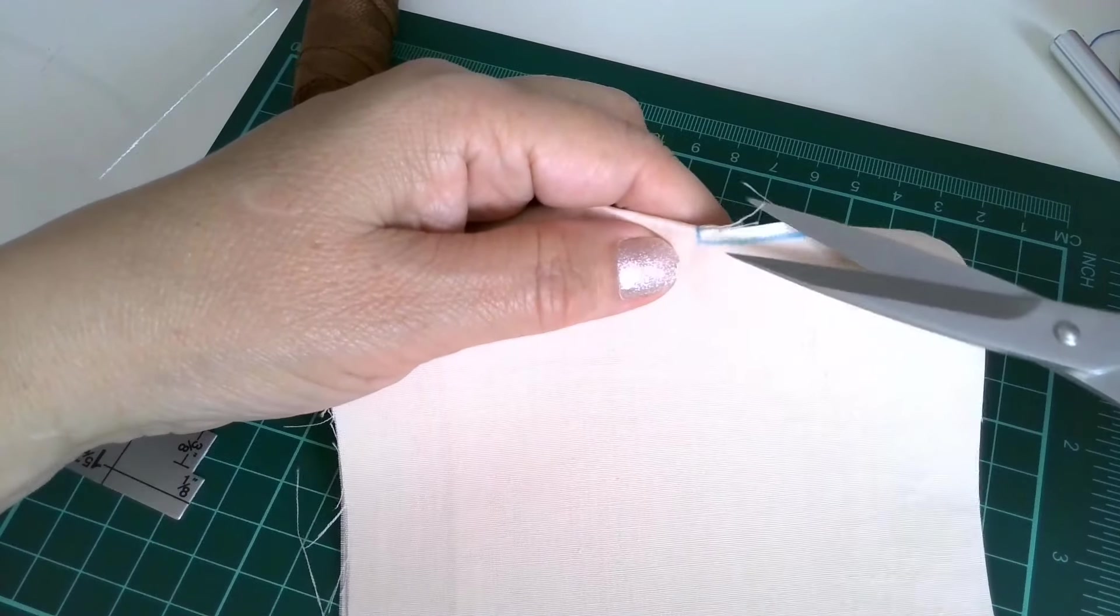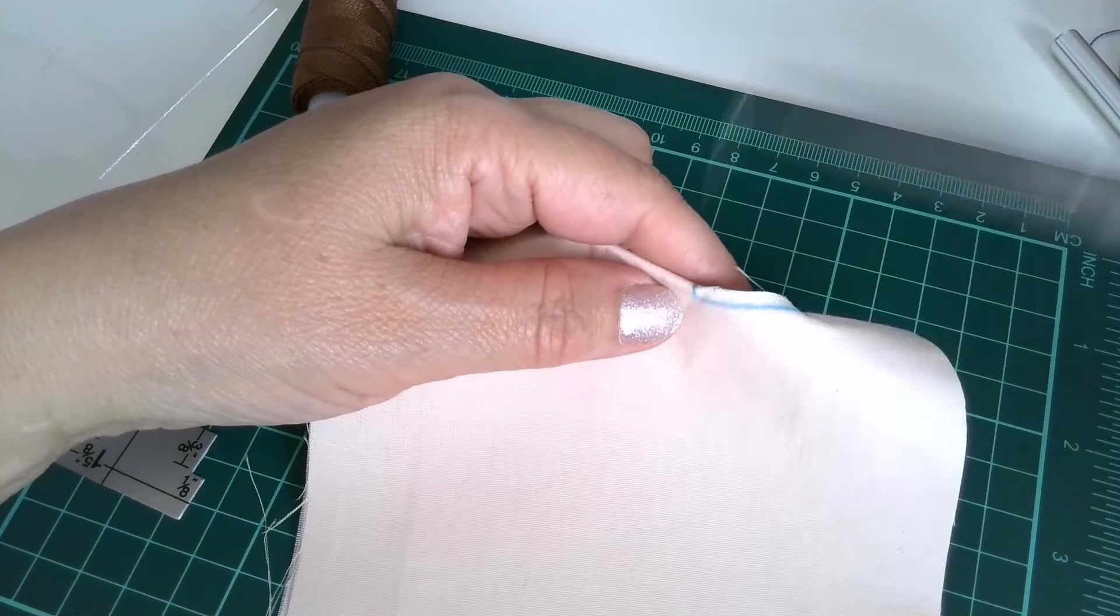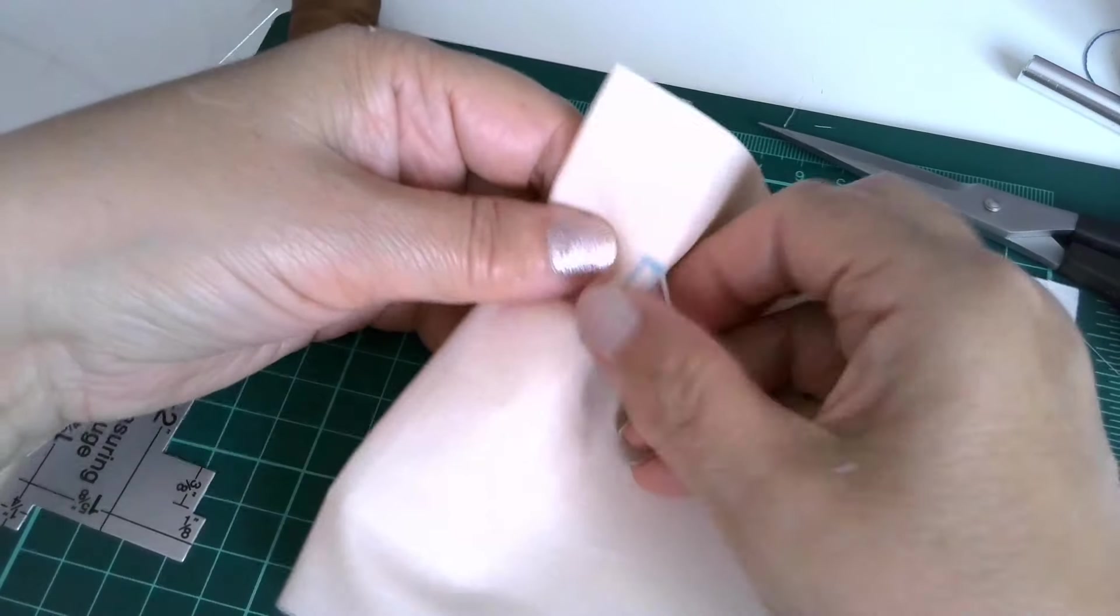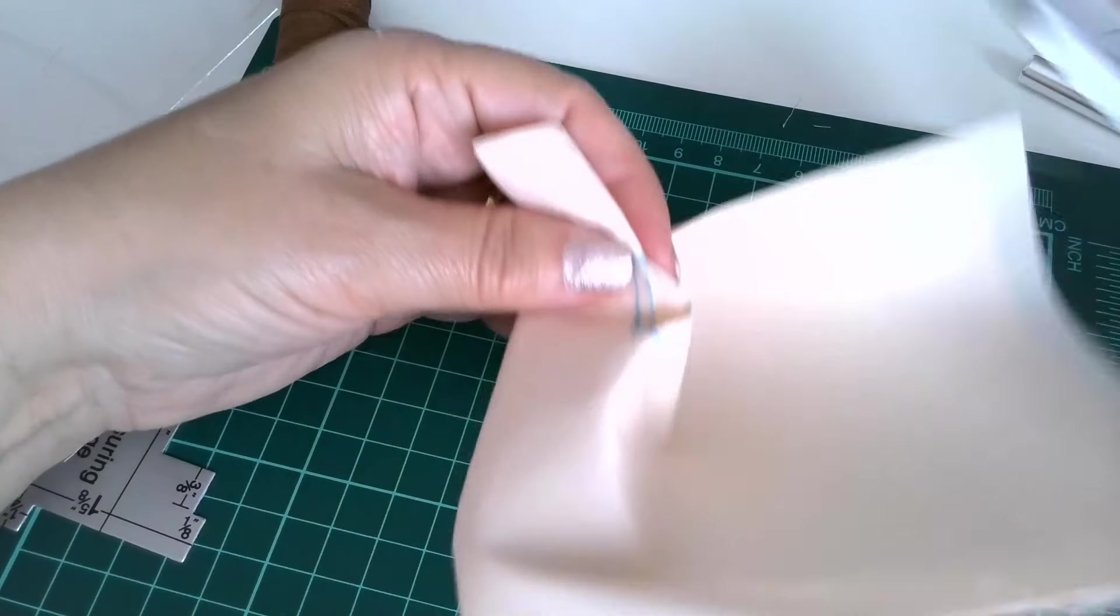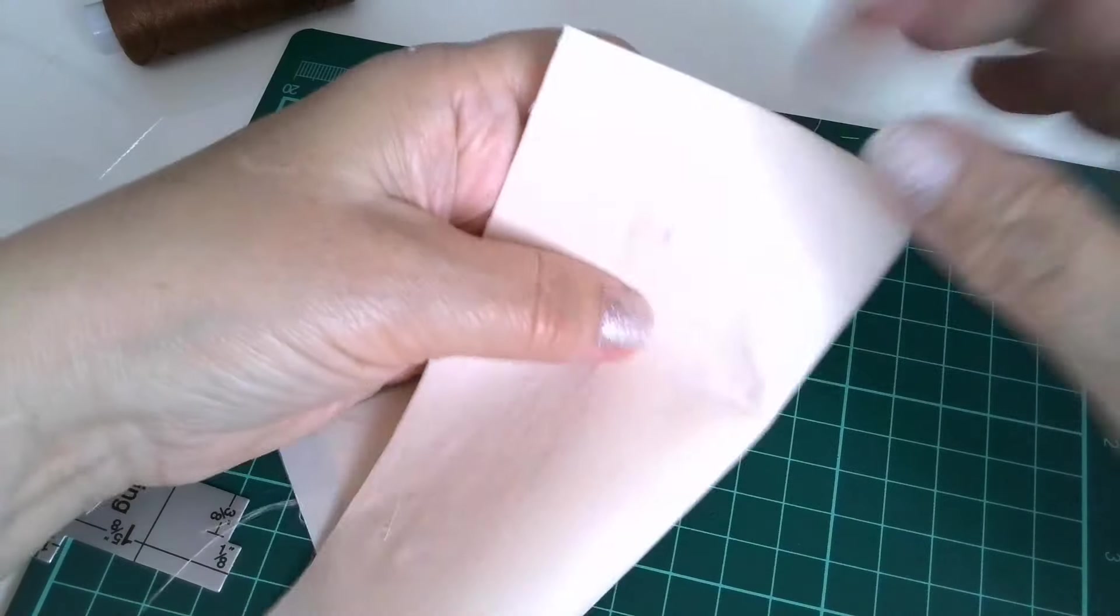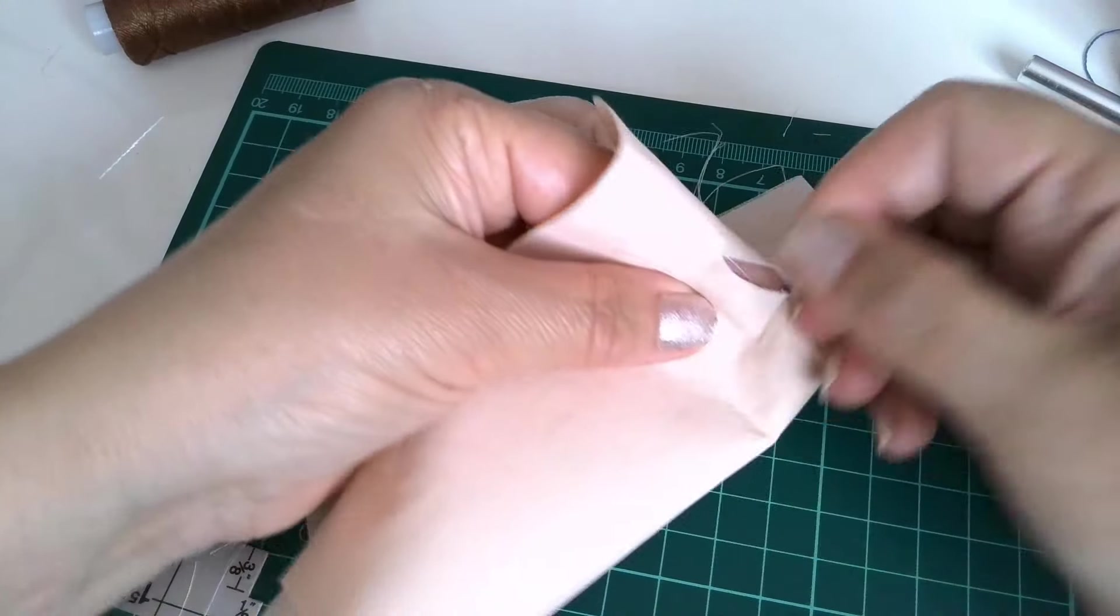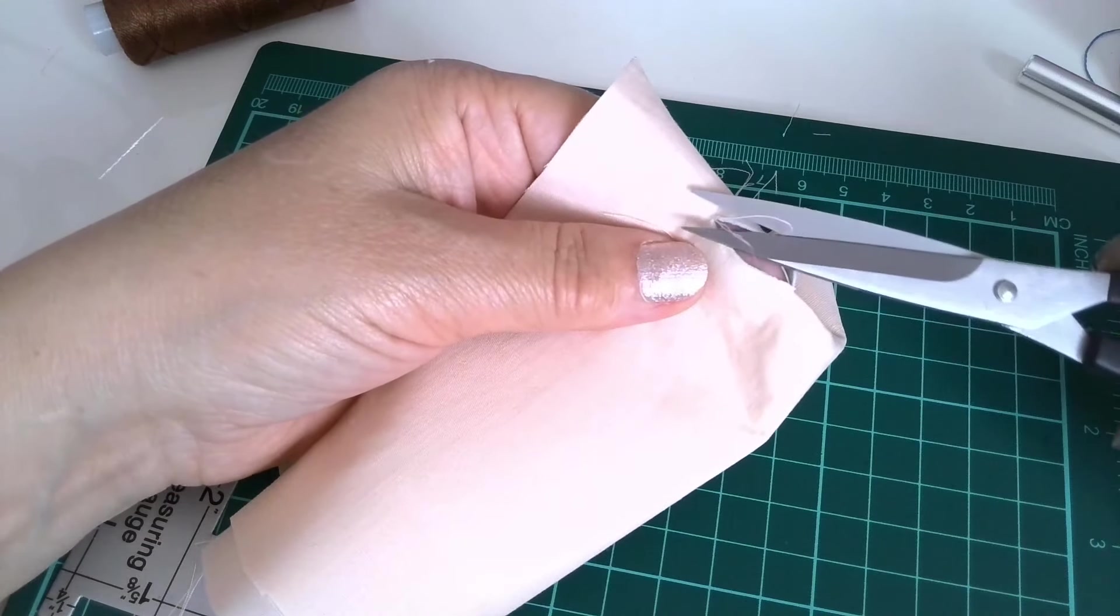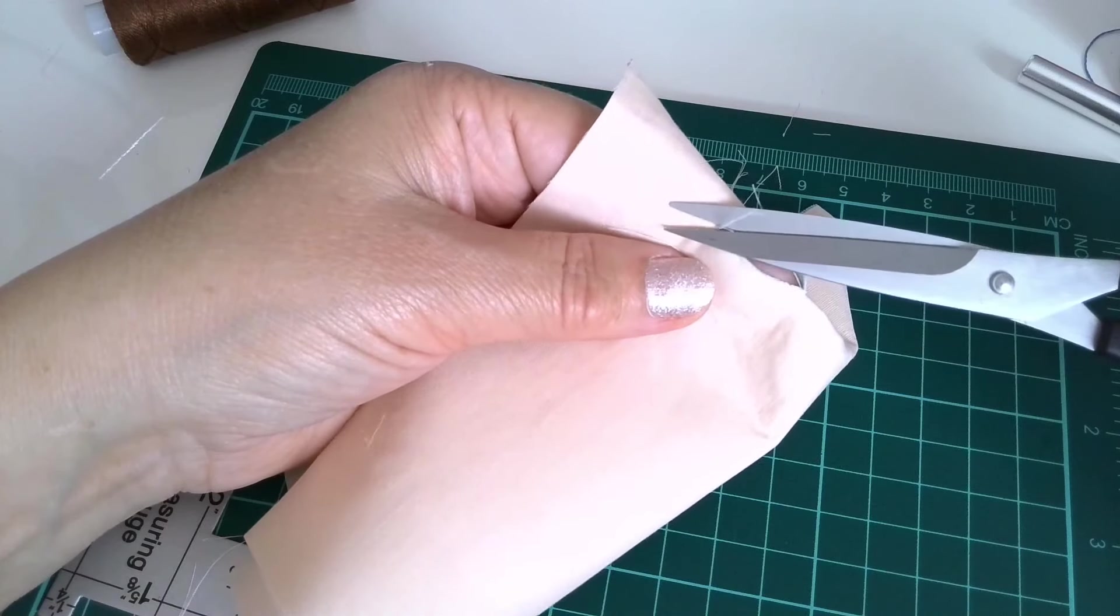Now we have to cut all these small threads that are coming and the buttonhole will be ready for sewing.